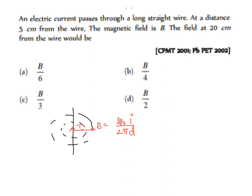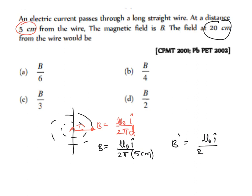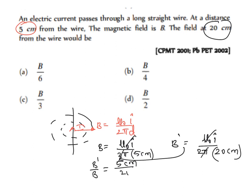At 5 cm: B = μ₀I / (2π × 5). At 20 cm: B' = μ₀I / (2π × 20). Taking the ratio B'/B, the μ₀I and 2π cancel, leaving 5/20 = 1/4. Therefore B' = B/4. Option B is the right answer.